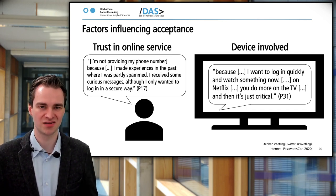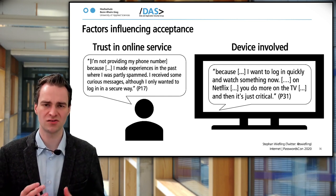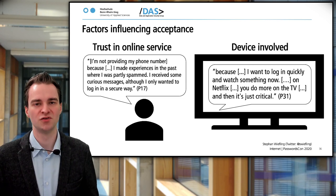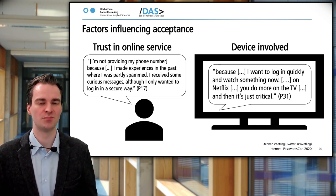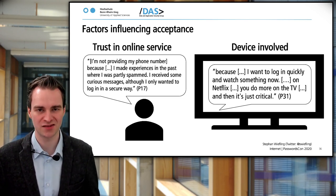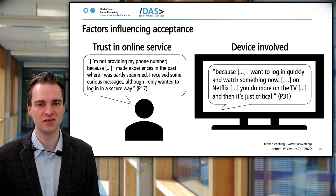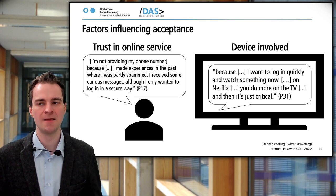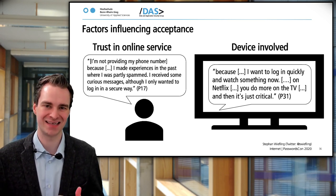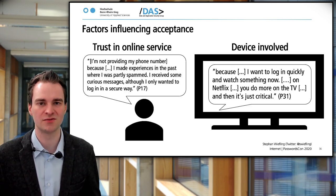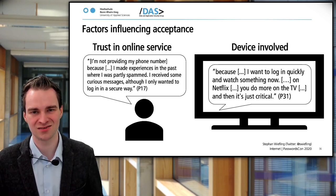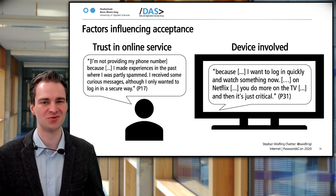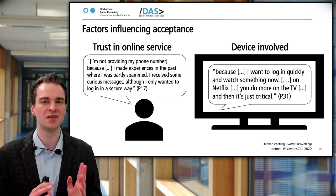There are also more factors influencing the acceptance of 2FA or RBA from our interview findings. One is the trust in the online service: one participant was not willing to give their phone number to a social media website because after providing it, they were not only asked for authentication via text message but also advertised and spammed a lot. Trust in the online service seems very important. Also the device involved matters — one person using Netflix was quite annoyed when Netflix triggered RBA and asked for verification via an email account on their television screen.